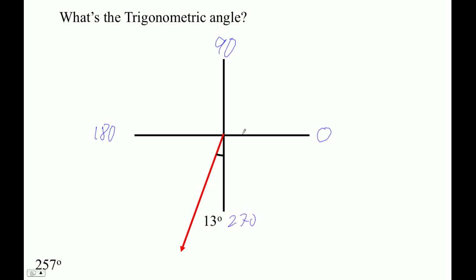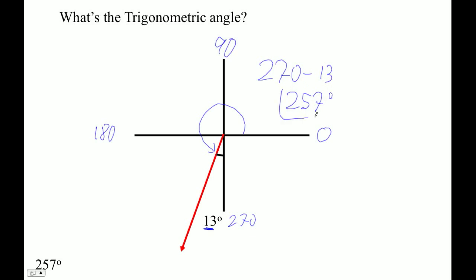Well, it looks like we didn't make it all the way to 270. It's 13 degrees shy of 270, so it would be 270 minus 13. And I think that's 257 degrees is your trig angle.